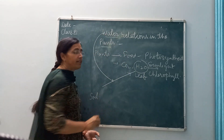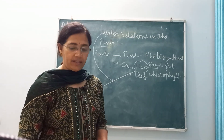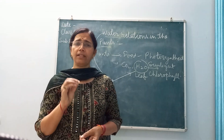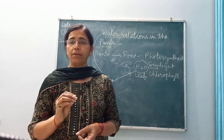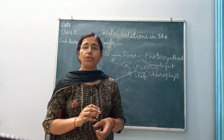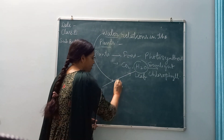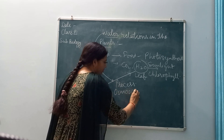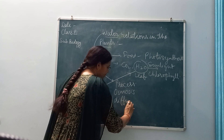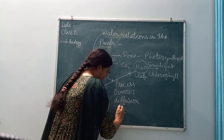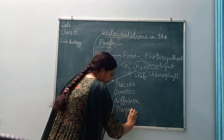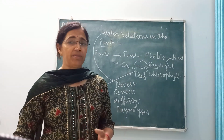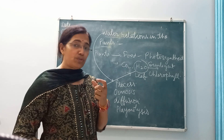So children, how does this water reach from the soil to the leaf? This relationship is known as water relations. It takes place by many processes, but before learning those processes, let me give you a few terms that must be clear to you. There are so many processes such as osmosis, diffusion, and plasmolysis, so before learning those, we will go through these small terms.